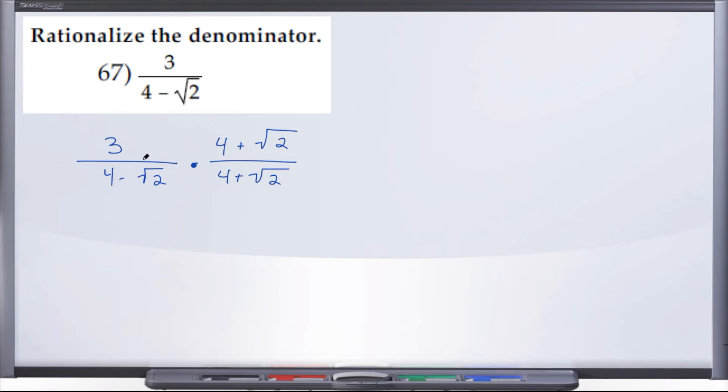Conjugate just means keep the terms the same, just flip the sign. So if you have a minus in your original fraction, your conjugate will have a plus. If you had a plus, your conjugate will have a minus. All right, let's see what we have here.